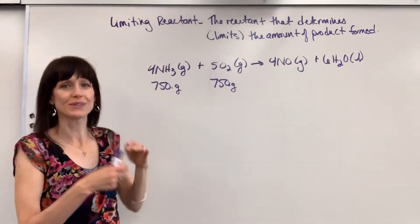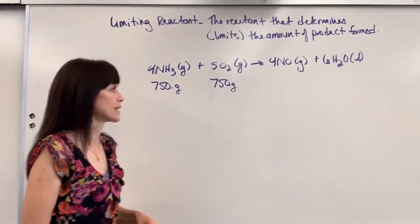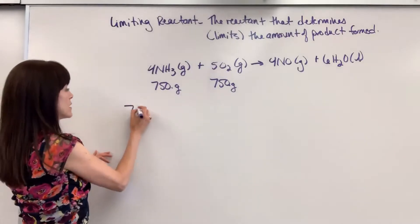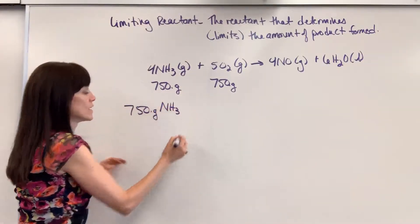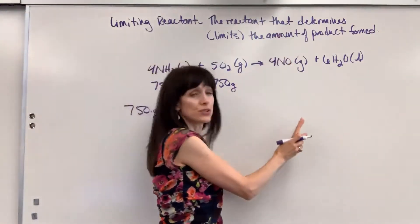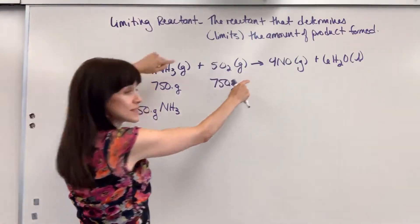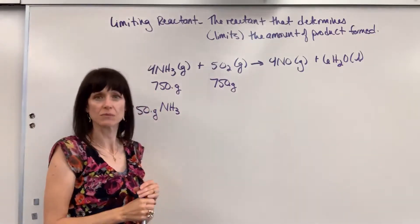So let's do this first ammonia going to the nitrogen monoxide. We begin with what we're given. We have 750 grams of ammonia. Now I'm going to walk the bridge. I'm going to go from ammonia to the nitrogen monoxide. In order to do that, we need to use the molar ratios, that bridge. Four moles of ammonia produces four moles of nitrogen monoxide.